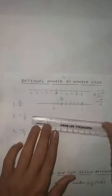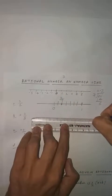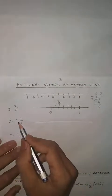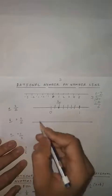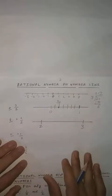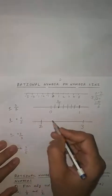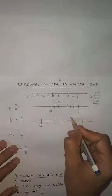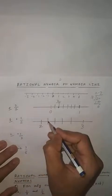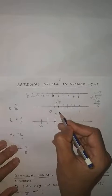Next is 2 whole 2 by 5. Same procedure you will apply. 2 whole 2 by 5 means 2 is given, so the number line should be between 2 and 3. You can identify easily the number line between 2 and 3. The denominator is 5, so you will divide into 4 equal parts: 1, 2, 3, 4. The first part is 1 by 5 and the second part is 2 by 5. So here you will write down 2 whole 2 by 5.